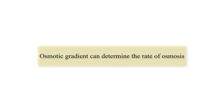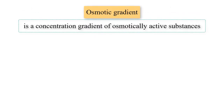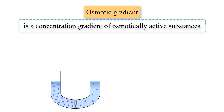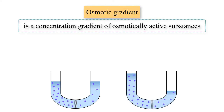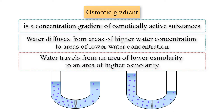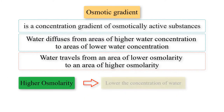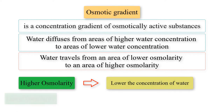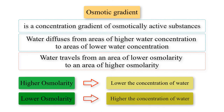An osmotic gradient is a concentration gradient of osmotically active substances. This means if concentrations of molecules that are not water are higher in one area than another, water will diffuse to where the concentration of non-water molecules is the greatest. The particles in the solution that are not water establish an osmotic gradient. Water diffuses from areas of higher water concentration to areas of lower water concentration. Water travels from an area of lower osmolarity to an area of higher osmolarity, because the higher the osmolarity, the lower the concentration of water, and the lower the osmolarity, the higher the concentration of water.